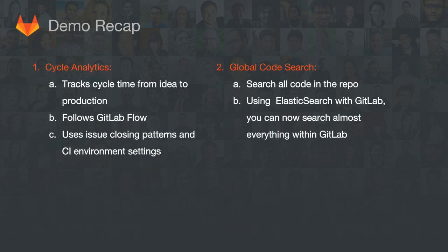To sum up: we released two exciting features in 8.12 — Cycle Analytics and global code search. Cycle Analytics tracks the time from idea to production, requires GitLab flow to function properly, and uses issue closing patterns and your CI configuration. Global code search lets you search all code in all your projects using Elasticsearch — if something exists in your GitLab instance, it is now searchable.